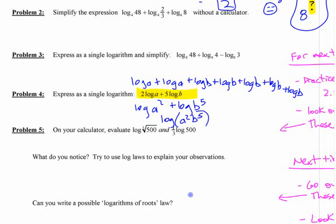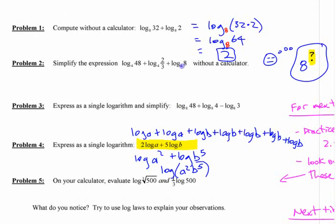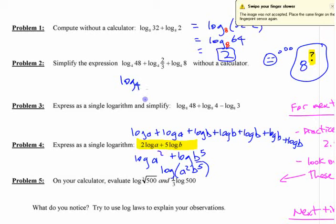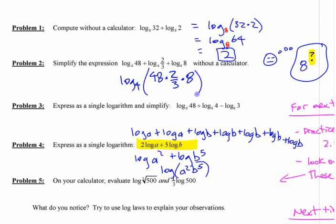Some of the other ones here, I'm going to assume the ones up above here you can do. This is going to be the same as log base 4 of 48 times 2 thirds times 8. If you work all that out, you get a power of 2. We have power of 4. You can figure out what base, what it is. What does this work out to here?